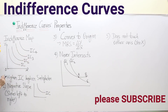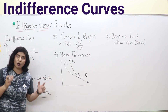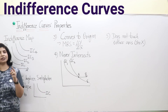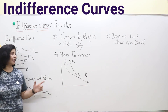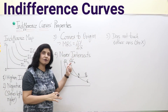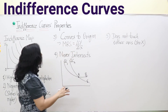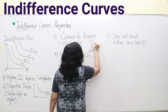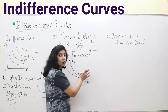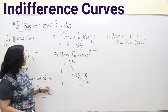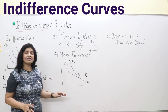The second property is the negative slope of the indifference curve, which we have already discussed — when we increase consumption of one commodity we must decrease the other, since income is constant. The third property is convex to origin. 'Convex to origin' means the curve bows toward the origin. This is different from concave, which curves away like a cave. The convex shape is a key property of the indifference curve.